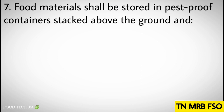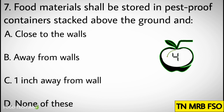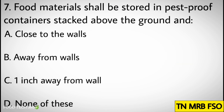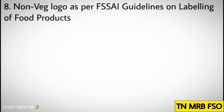Question number seven: Food materials shall be stored in pest-proof containers, stacked above the ground and — options: A) Close to the walls, B) Away from walls, C) One inch away from wall, D) None of these. Correct answer: B) Away from walls.